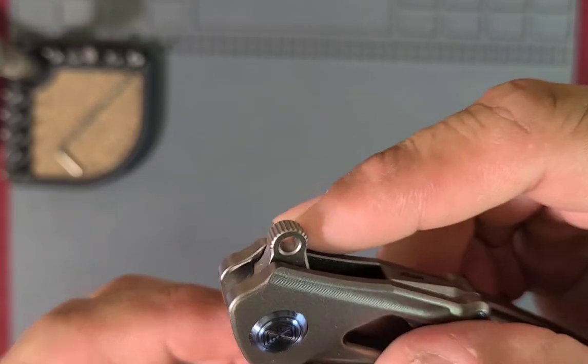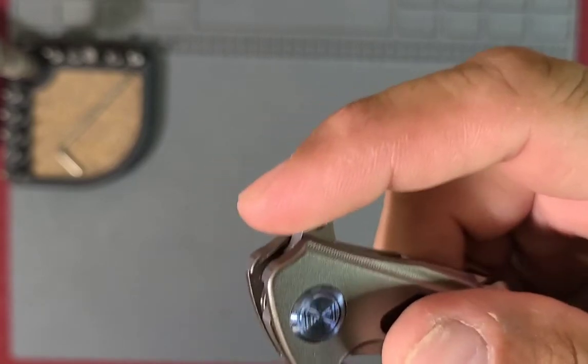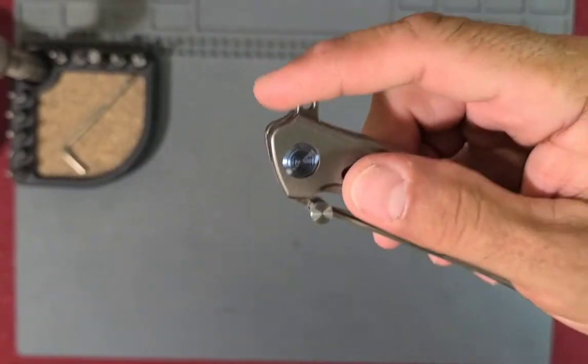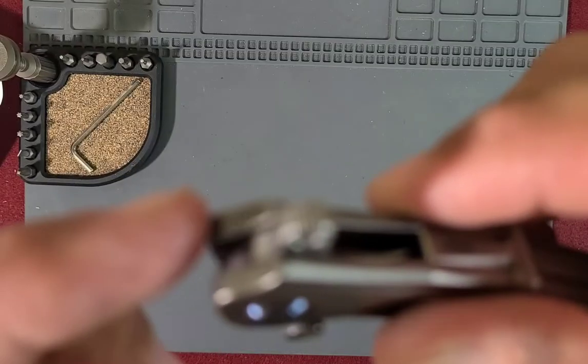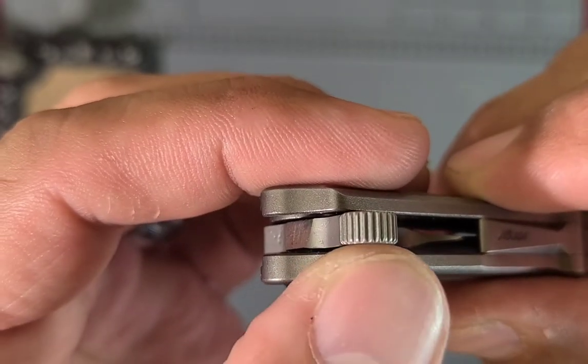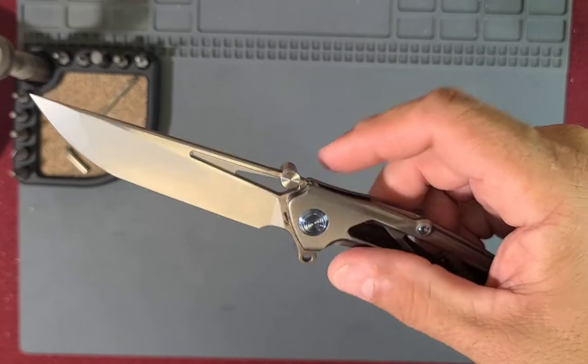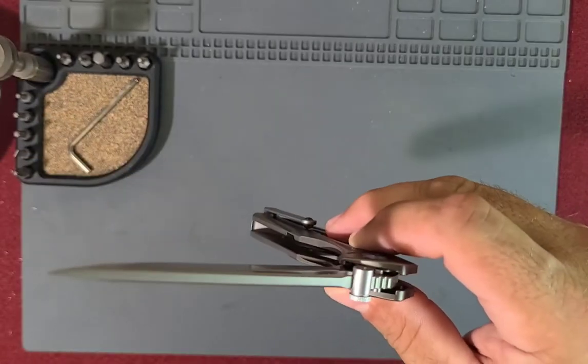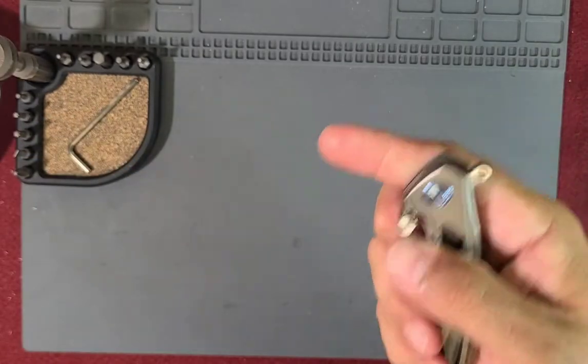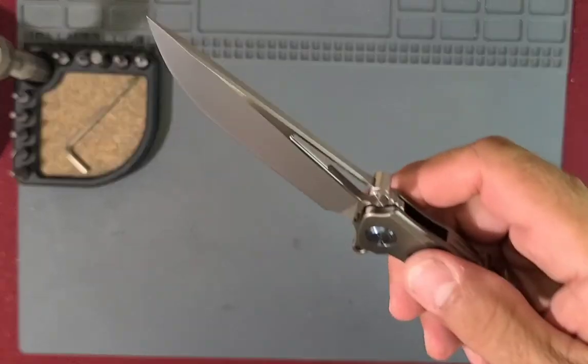The flipper tab, it's a little big, but it is a no miss flipper tab that's for sure. It's very knurled, lots of jimping, knurling, whatever you want to call it across there. You can't miss that sucker and you can't really misfire it. It's not happening.